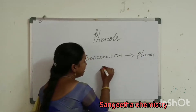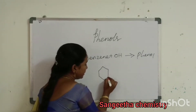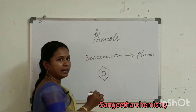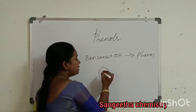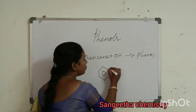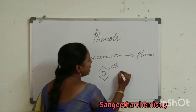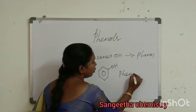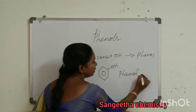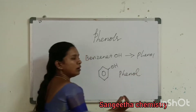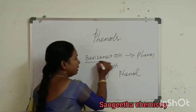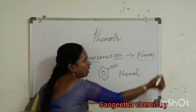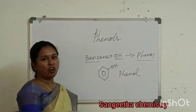There is a benzene ring. In the benzene ring, there is an OH attached. It is called phenol. So benzene plus OH is equal to phenol.